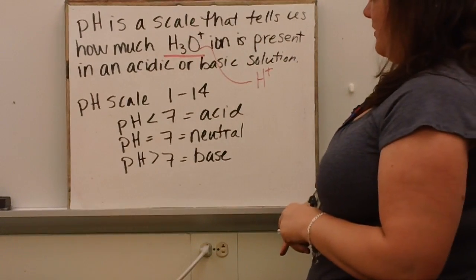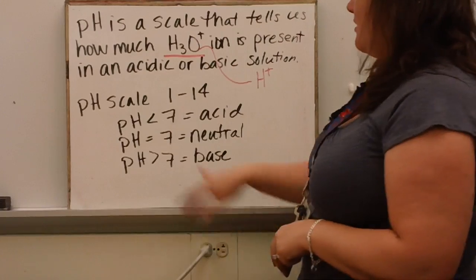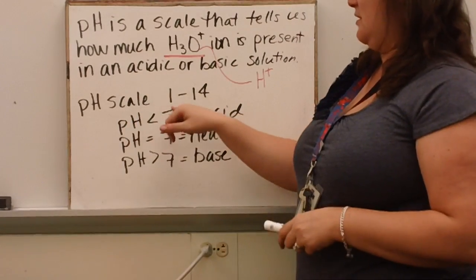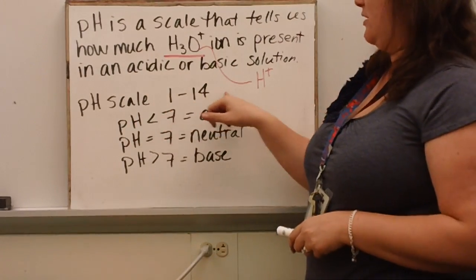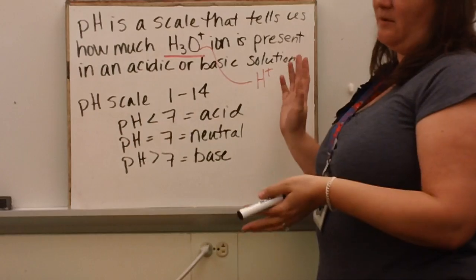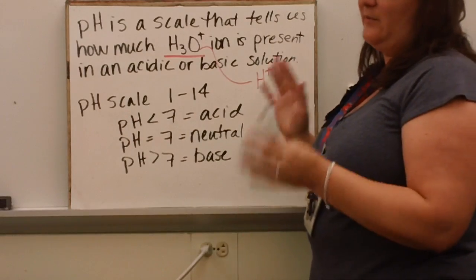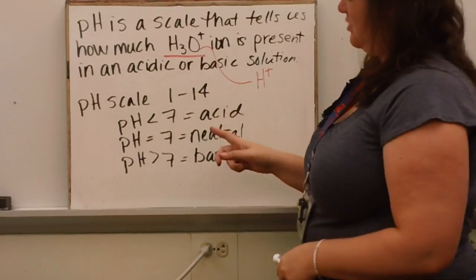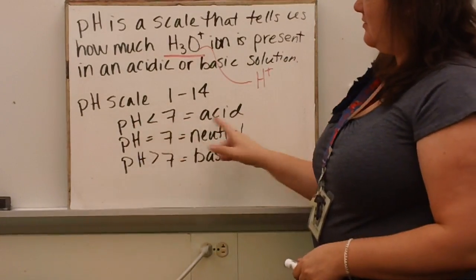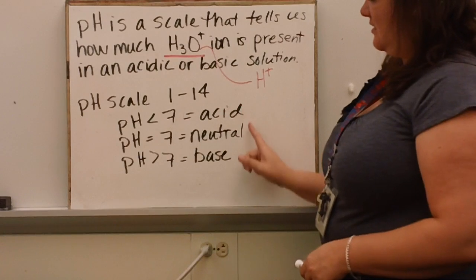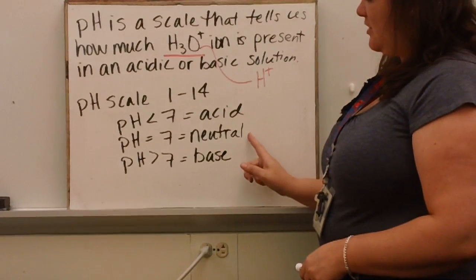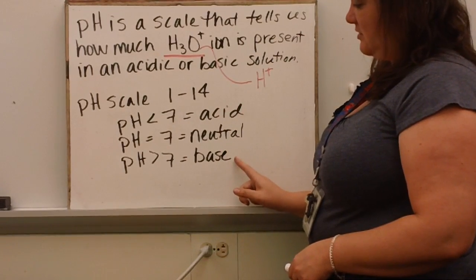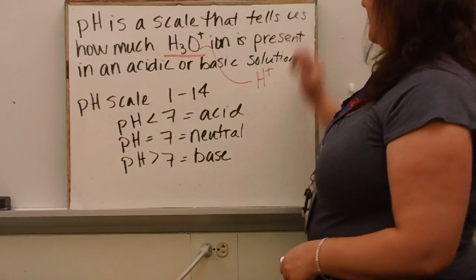We'll talk about acids and bases. The pH scale, if you recall from your reading, is between 1 and 14 — although it can go beyond either side, the basic scale is 1 to 14. A pH of less than 7 is an acid, a pH of 7 is neutral (water), and a pH greater than 7 is a base.